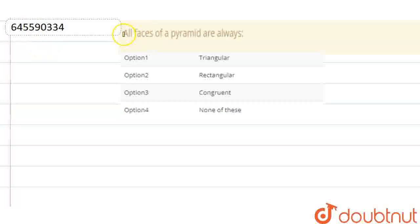Hello everyone, so our question is: all the faces of a pyramid are always. We have given 4 options and we need to tell which option is correct.